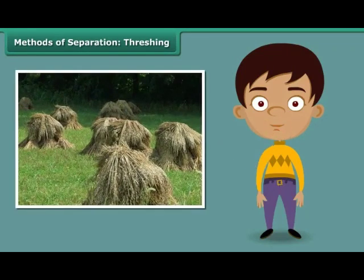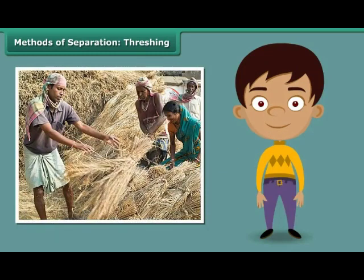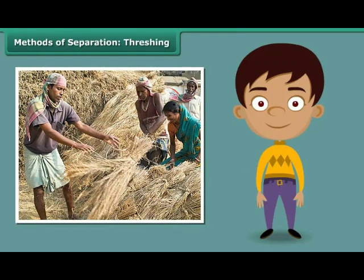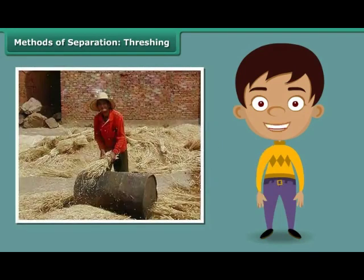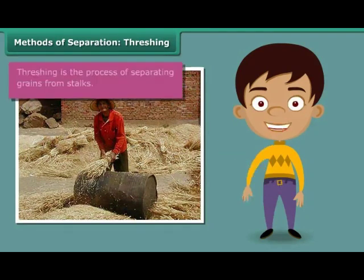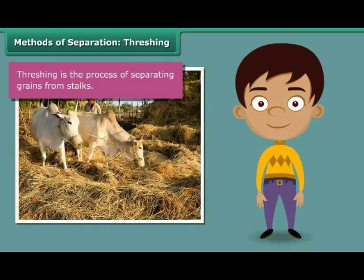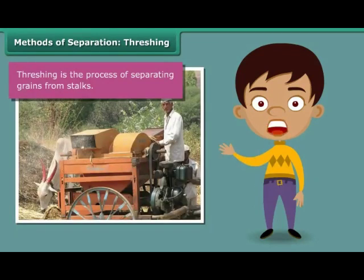You must have seen bundles of wheat or paddy stalks lying in fields after harvest. Have you pondered how a farmer separates the grains from these stalks? Once the wheat or paddy crop is harvested, the farmer ties the stalks together to form bundles, then leaves them to dry in the sun. Once the stalks are completely dried, the farmer beats them against a hard floor to free the grains. This process of separating grains from stalks is known as threshing. Bullocks, oxen and machines known as threshers are also used for this purpose.